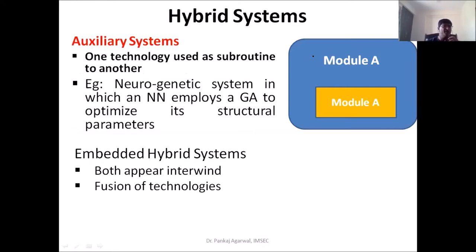The second type is auxiliary systems, where we use another technology as a sub-module of the main technology. For example, genetic algorithms can be used as a sub-module in a neural network solution or vice versa. The neuro-genetic system is an example in which the neural network employs a genetic algorithm to optimize the structural parameters, since GA is very good at optimizing different parameters.